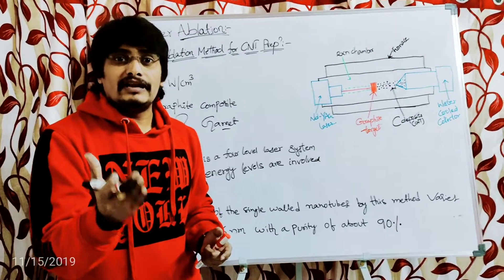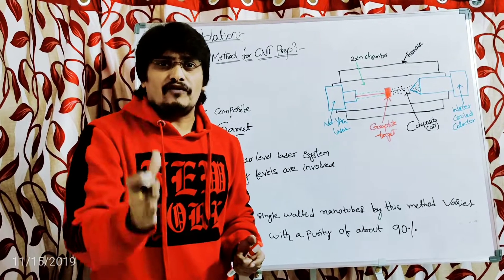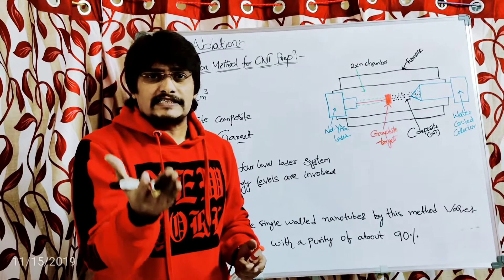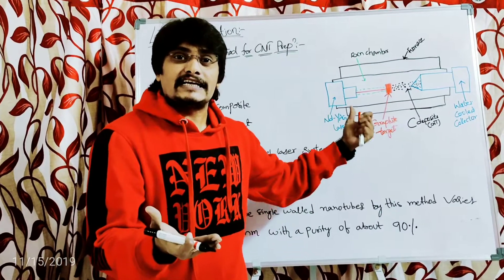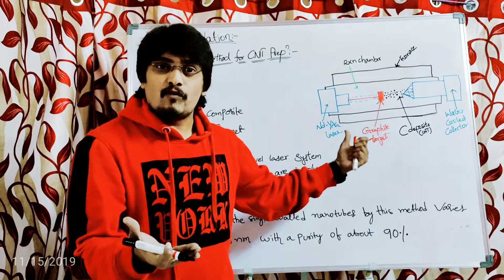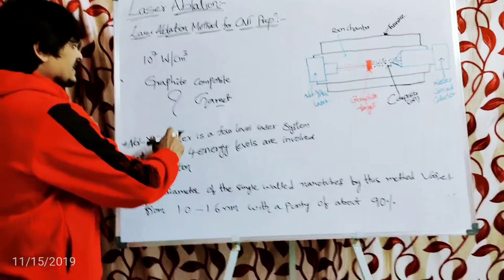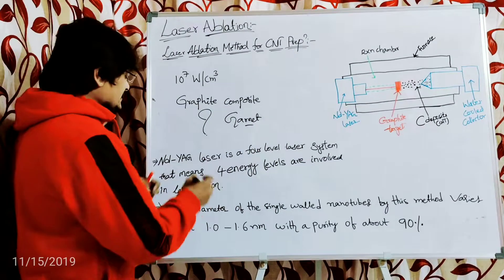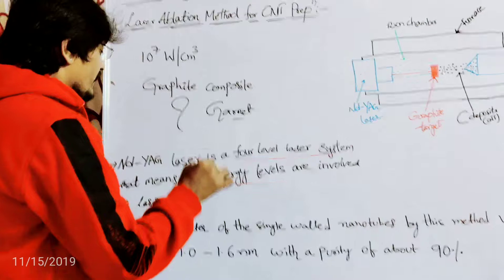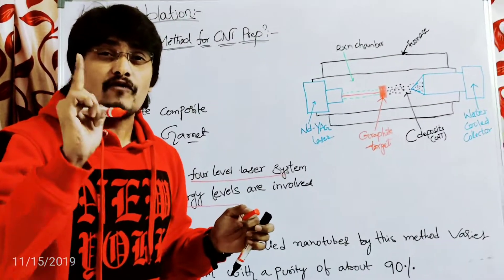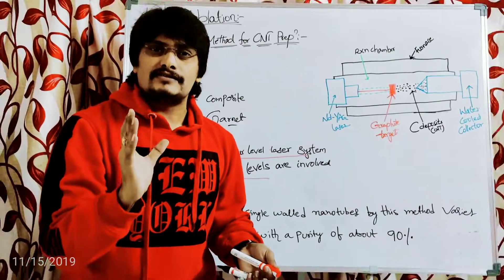That is the reason Nd:YAG laser is used — because it is a powerful laser that can break the strong covalent bonds holding adjacent carbon atoms in the graphite target. It is powerful because it is a four-level laser system, meaning four energy levels are involved in the laser action.